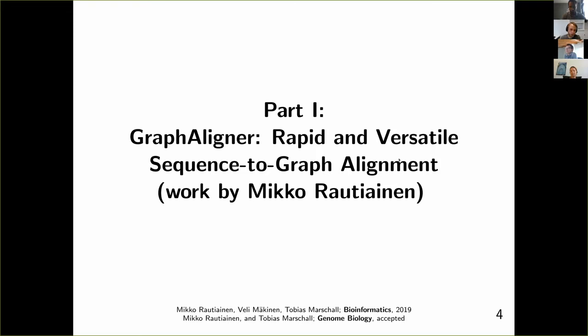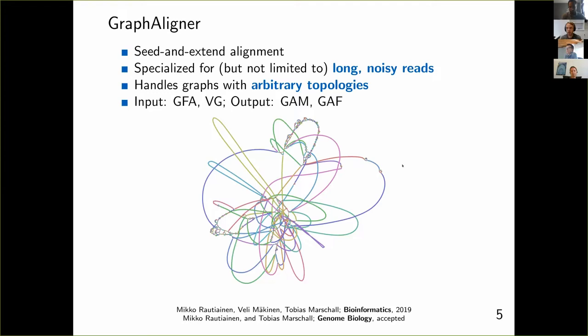The first part I want to go into is Graph Aligner, which is work done by Mikko Rautiainen. The mission of Graph Aligner is straightforward: given a graph where nodes are labeled with sequences — with overlapping or non-overlapping labels — align sequences to it without making any assumptions about graph topology. In particular, cycles are supported. The specific use case that motivated this development was noisy long reads, as Mikko noticed there weren't any good tools for that.